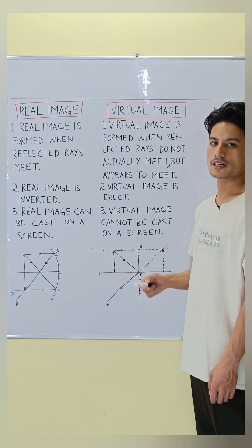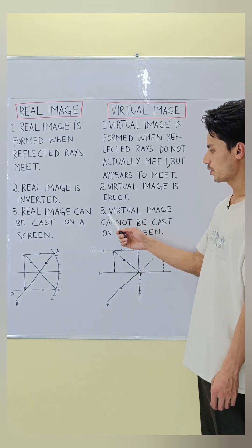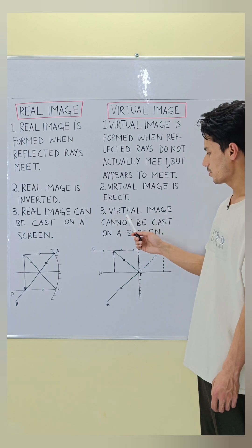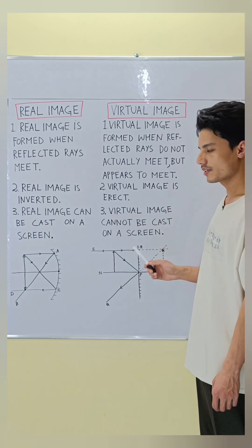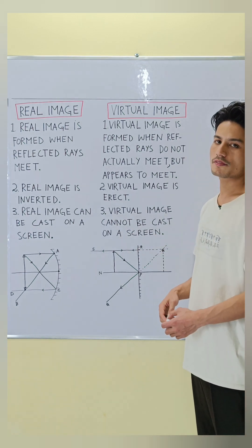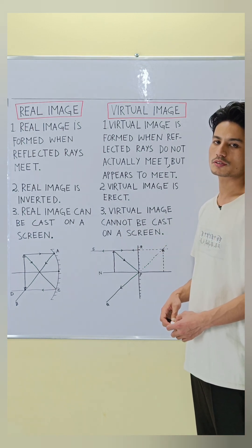Real image, point number three: a real image can be cast on a screen — for example, the projection of a movie inside a movie theater. Virtual image, point number three: a virtual image cannot be cast on a screen — for example, when you stand in front of a mirror, the image formed on the mirror cannot be cast on any screen.